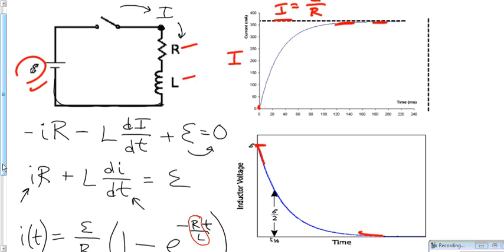So, somewhere around, I think here, is about 63 percent of the way up. So, that allows us to find the time constant, tau.